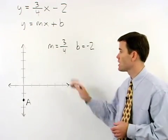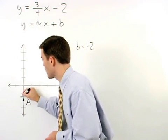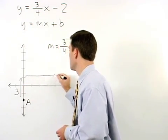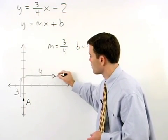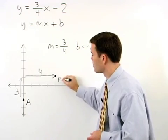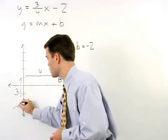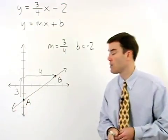From there, we take our slope of 3/4. So our rise is 3 and our run is 4, and we end up at point B. Connect the two points, and we have our line.